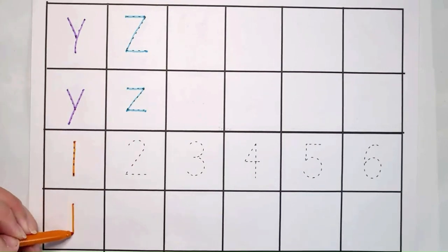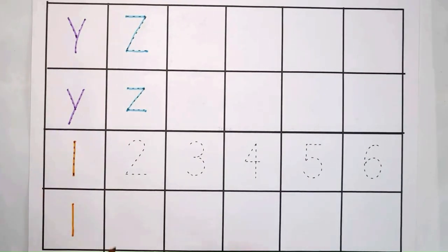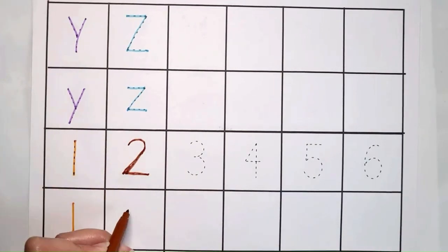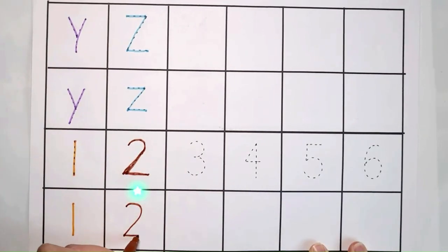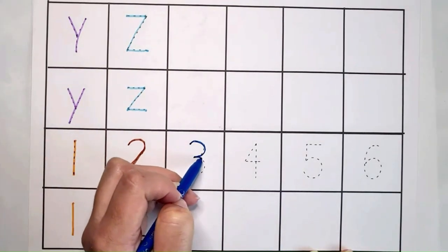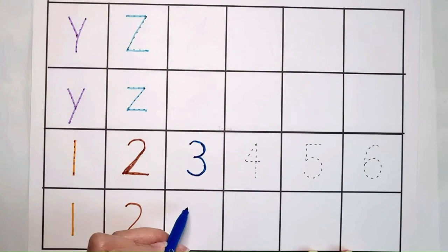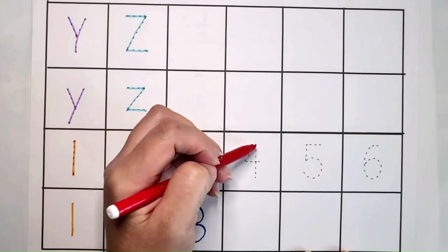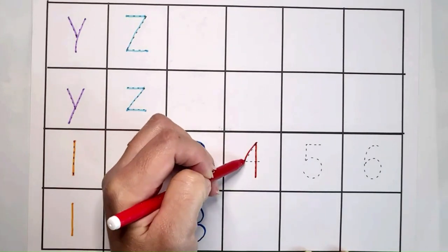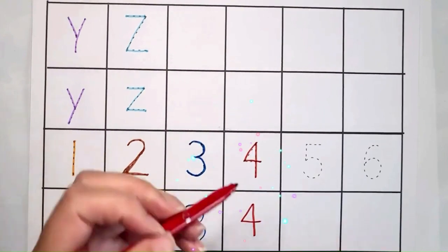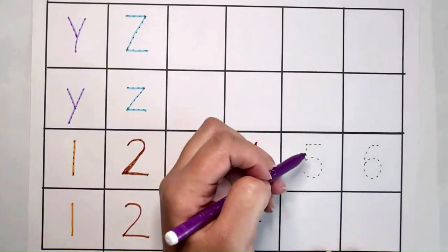One. Two. Two. Three. Three. Four. Four, five.